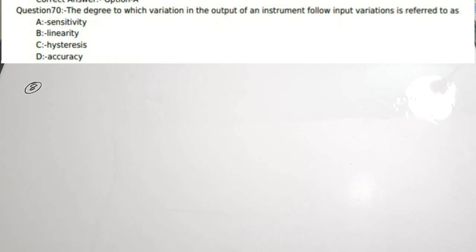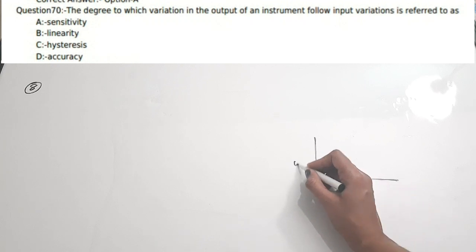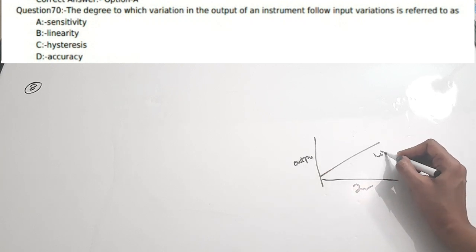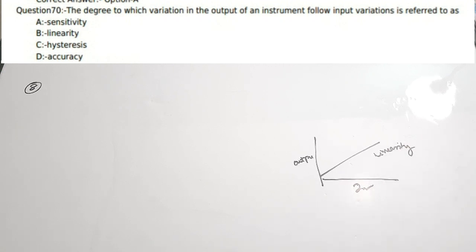Eighth question from electronic instrumentation: The degree to which variation in the output of an instrument follows the input variation is referred to as — A) sensitivity, B) linearity, C) hysteresis, D) accuracy. If the output varies in direct correspondence with the input, it is called linearity. There is a separate playlist for electronics instrumentation covering all basic instrument characteristics. Correct answer is option B — linearity.